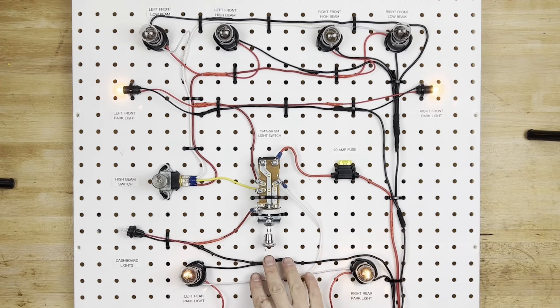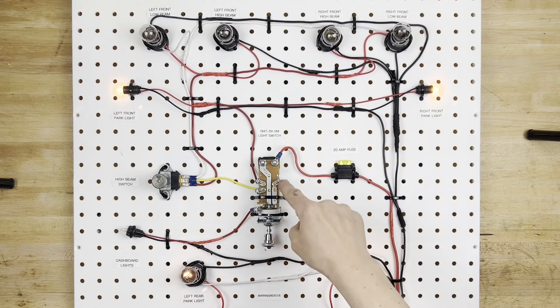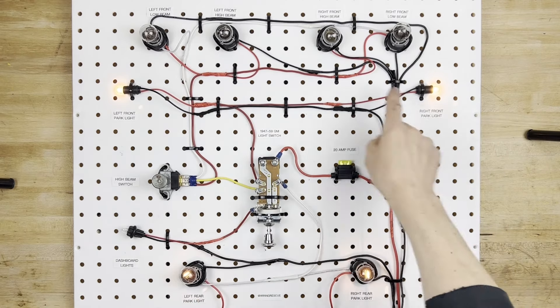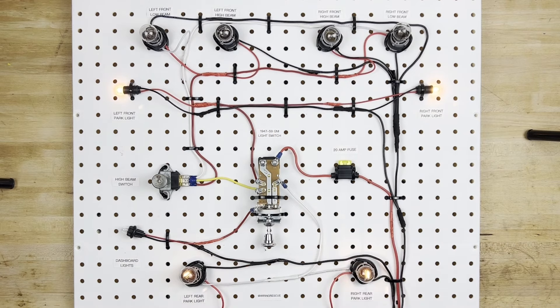You can see, as soon as we pulled out the switch just a little bit, it sent power out the white wire, and it turned on both of these bulbs. Now at the same time, you can see these front light bulbs are on too, so let's talk about those next.